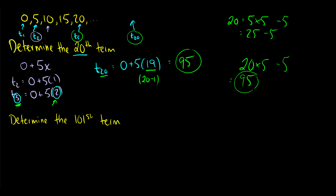Here's something a little more complicated — let's determine the 101st term. We had an intuition about our formula. So t101 is going to be 0 plus 5 times 100, which is equal to 500. And if you did write out all 101 terms, you would find that yes, this is the case.